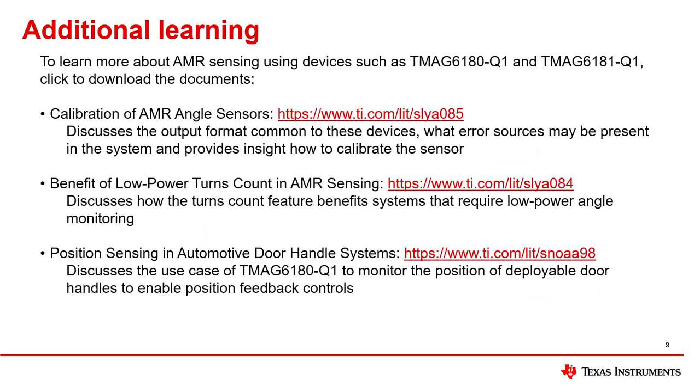To learn more about AMR sensing using devices such as TMAG-6180Q1 and TMAG-6181Q1, click the links below to download the documents. Calibration of AMR angle sensors discusses the output format common to these devices, what error sources may be present in the system, and provides insight how to calibrate the sensor. Benefit of low power turns count in AMR sensing discusses how the turns count feature benefits systems that require low power angle monitoring. And position sensing in automotive door handle systems discusses the use case of TMAG-6180Q1 to monitor the position of a deployable door handle to enable position feedback controls.